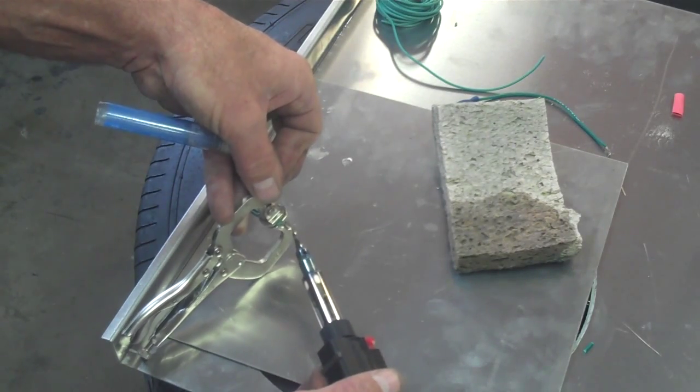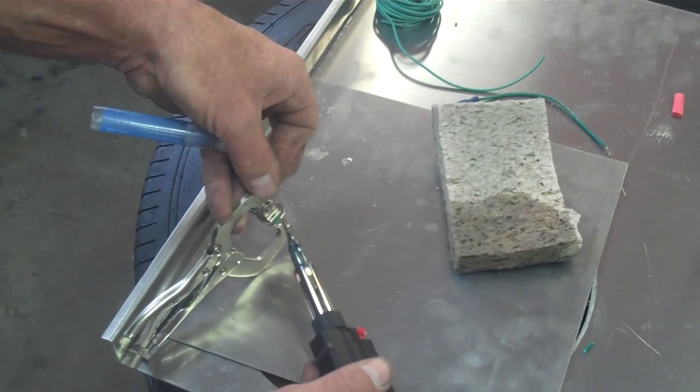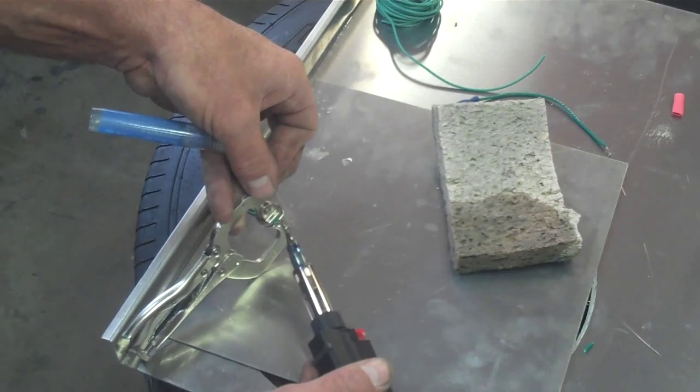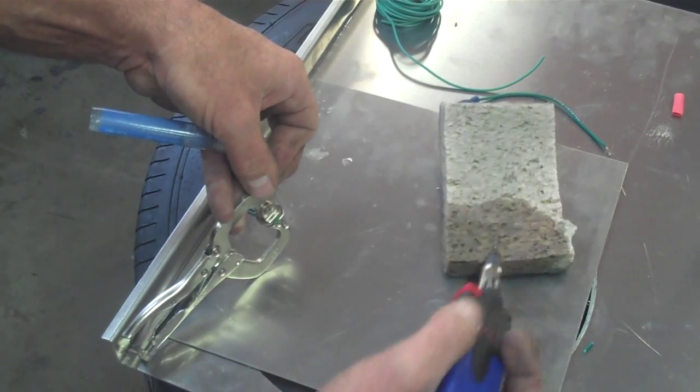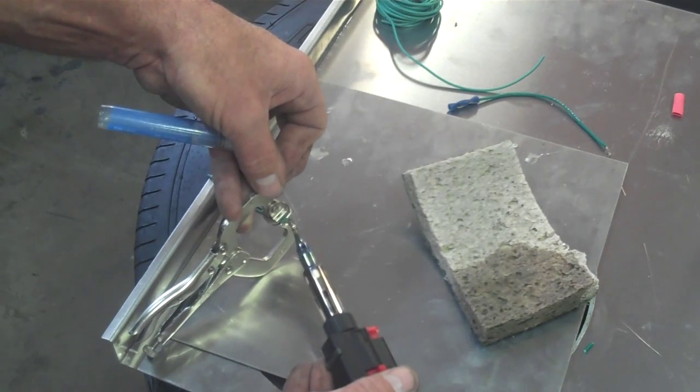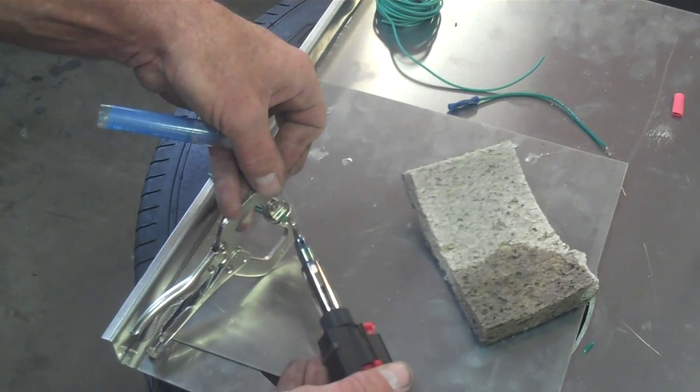Pull the excess solder through. Now you'll notice that I'm actually applying the solder to the back side of the surface I'm working on, and allowing the heat of the soldering iron to pull the solder through the wires.